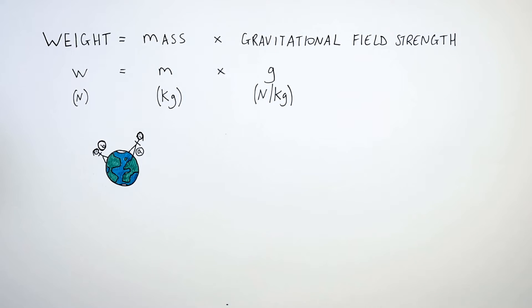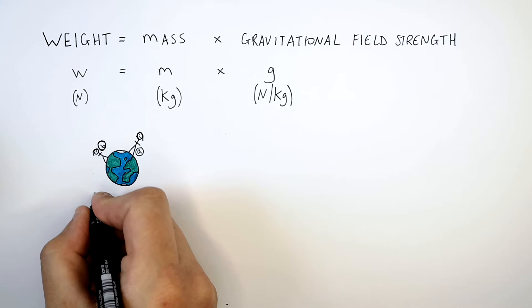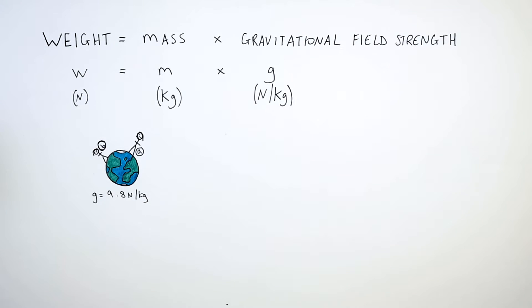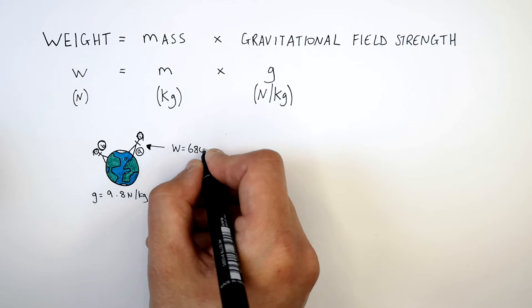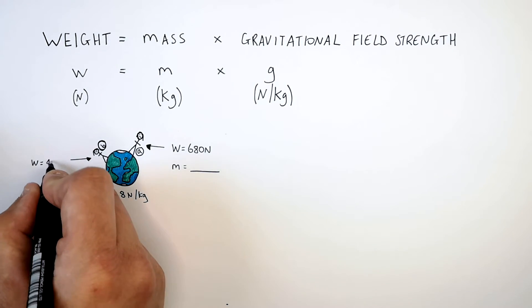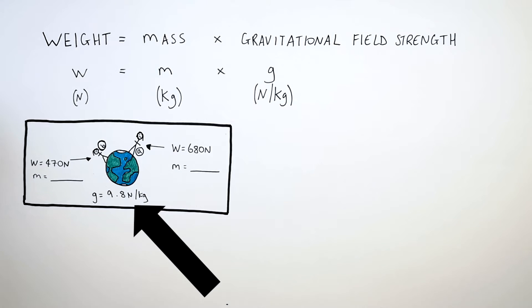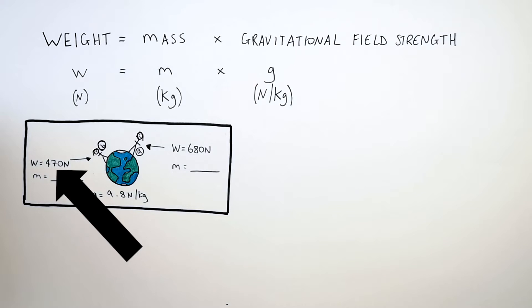So these two people, person A and B, are on Earth. Remember, Earth has a gravitational field strength of 9.8 newtons per kilogram. We have their weights: person A's weight is 680 newtons and person B's weight is 470 newtons. Because we've got the gravitational field strength of Earth at 9.8 newtons per kilogram and we've got their weights, we can use this information to calculate their masses.